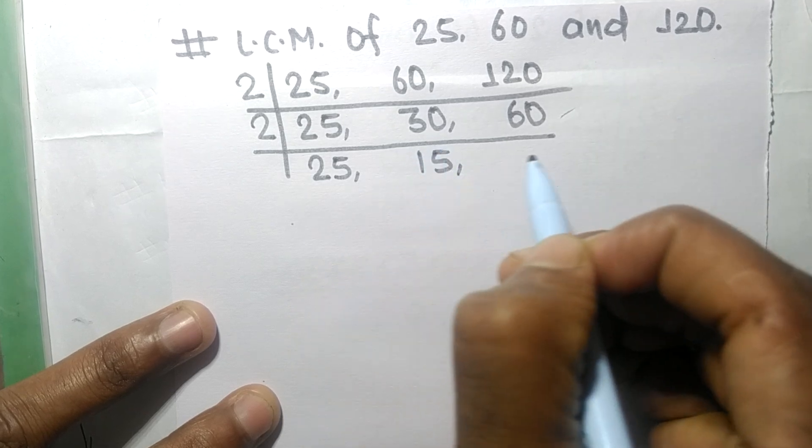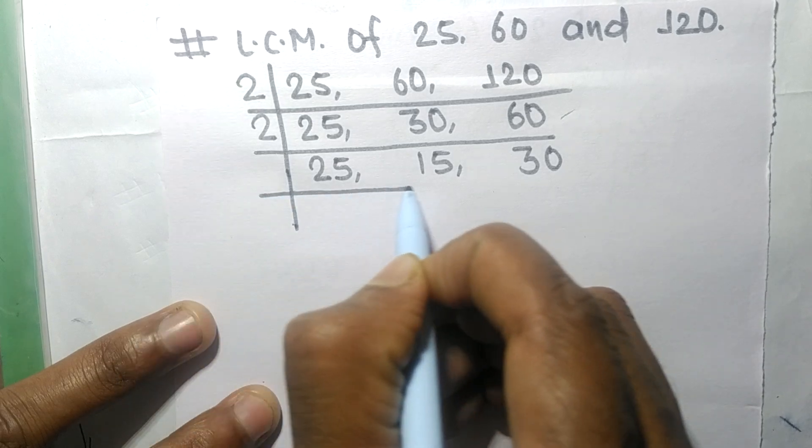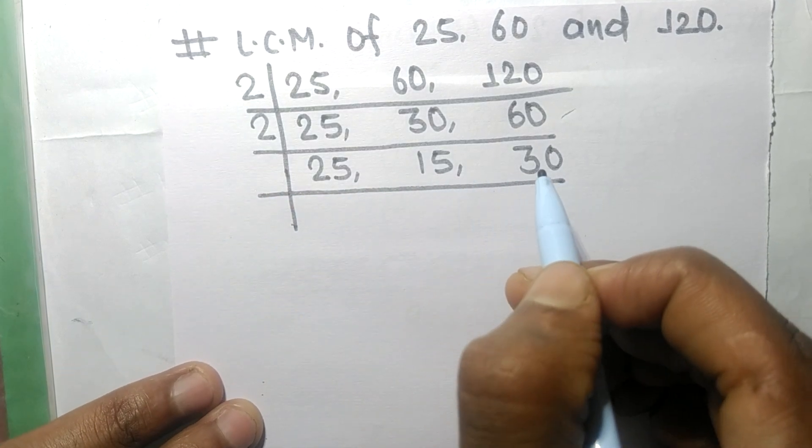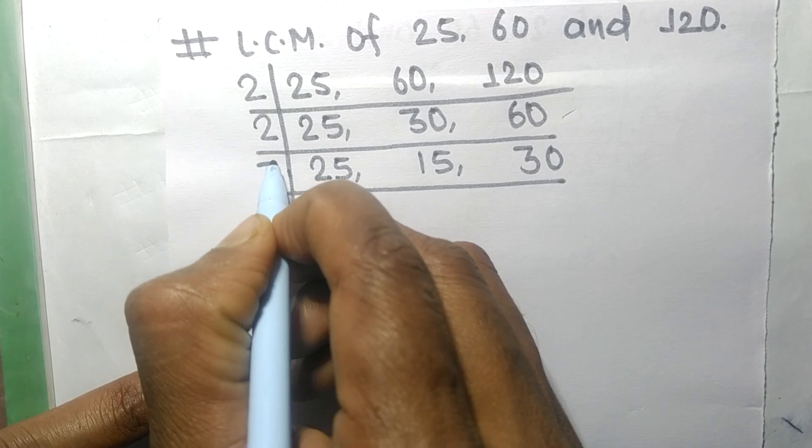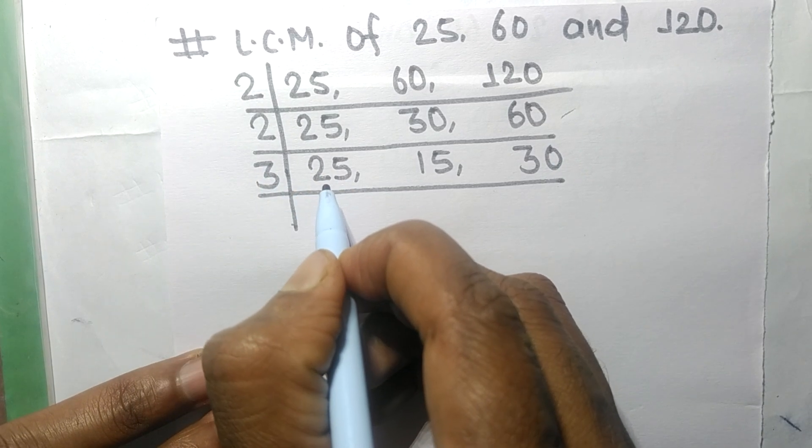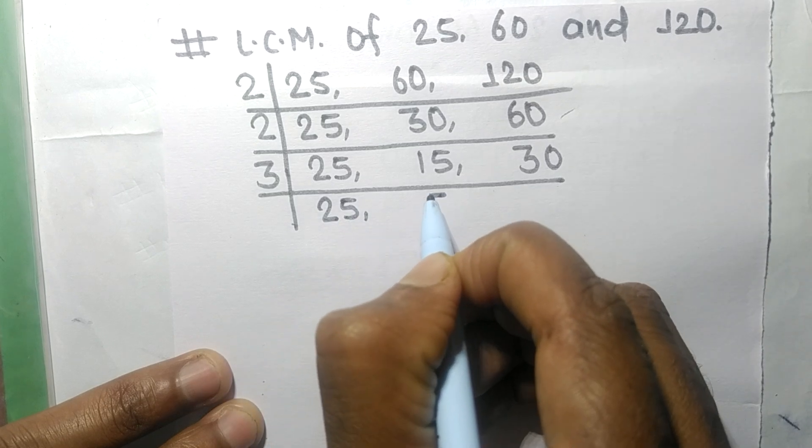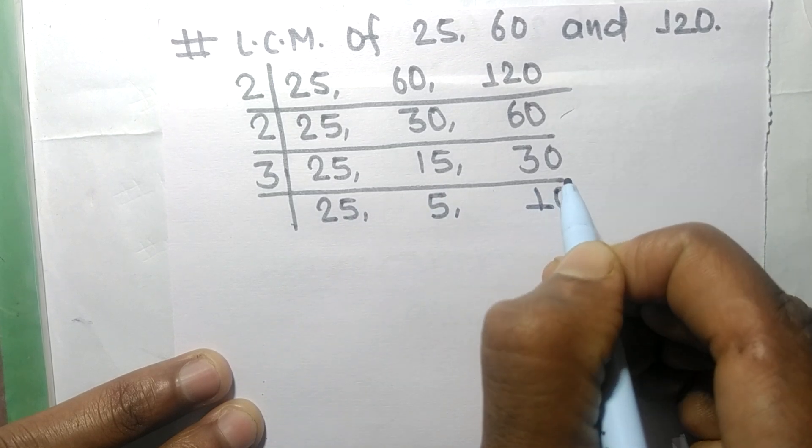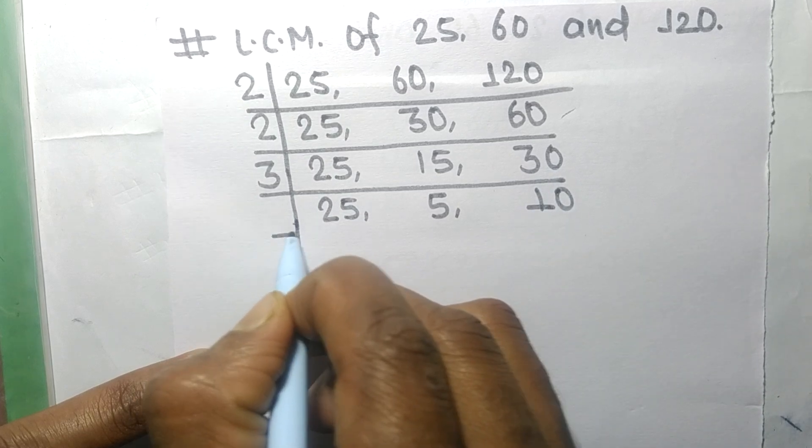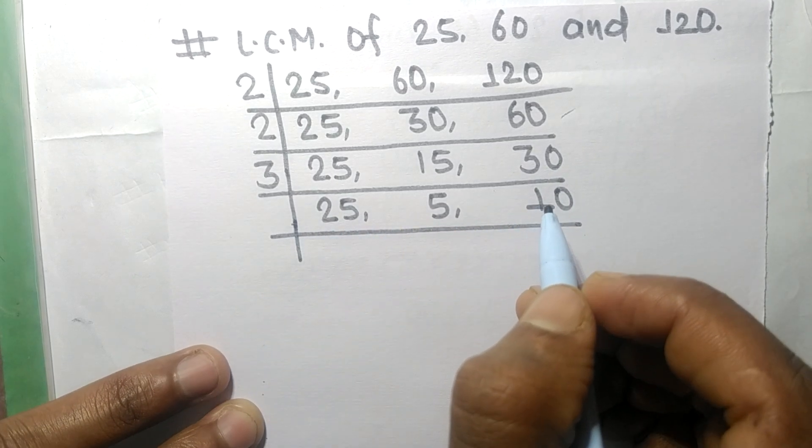Now this 15 and the 30 are exactly divisible by 3, 25 not divisible so it is same. 3 times 5 means 15, 3 times 10 means 30. So these all numbers are exactly divisible by 5.